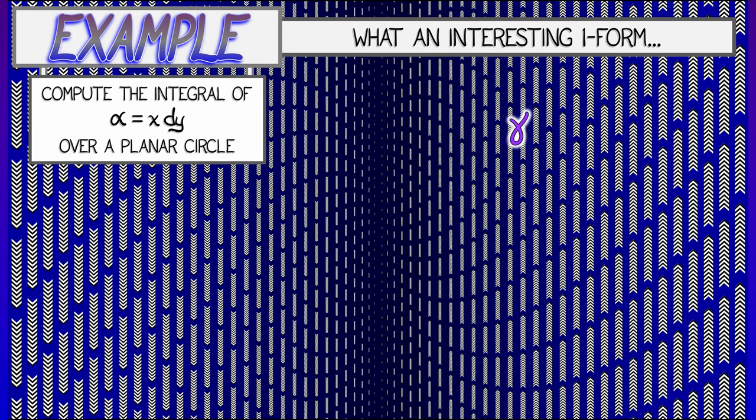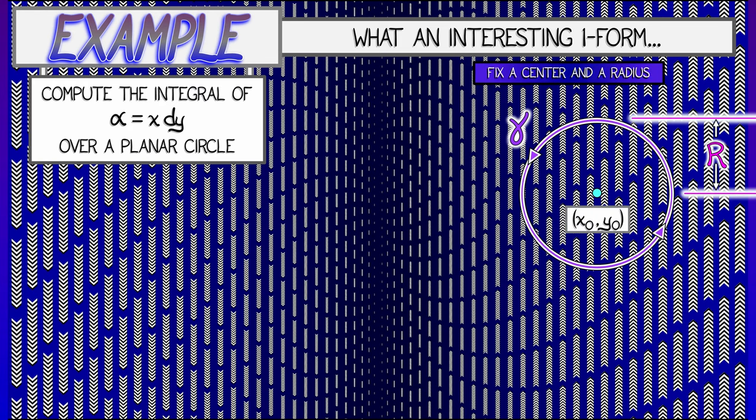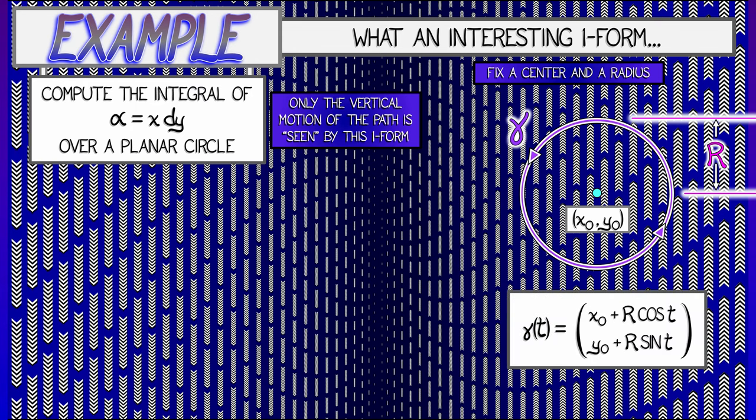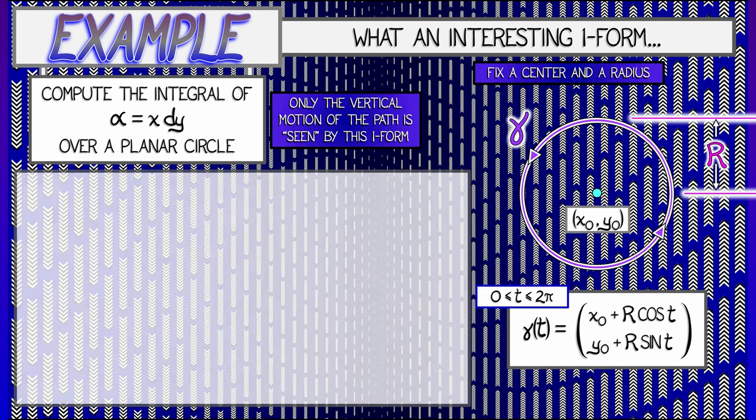Let's say we fix some center, I don't know, x naught comma y naught, and then pick a radius. Let's say capital R. What happens in this case? Well, in this case, we can't do that integral in our head. We've got to think about what is happening. Only the vertical component of the motion along this path is seen by this one form. So, let's parametrize this. Let's say that gamma of t is given by x naught plus r cosine t, and y naught plus r sine t, as t goes from 0 to 2 pi.